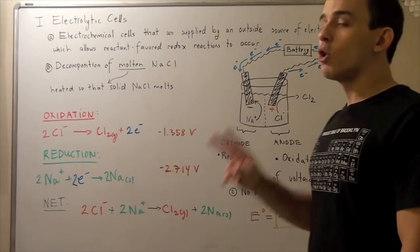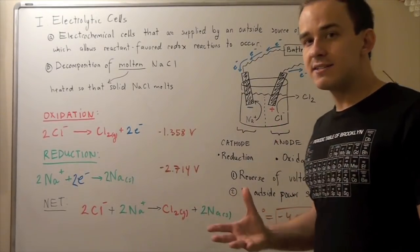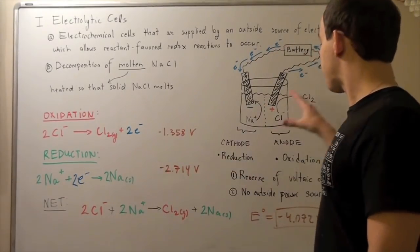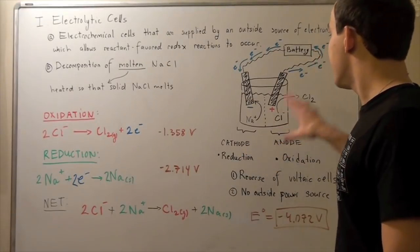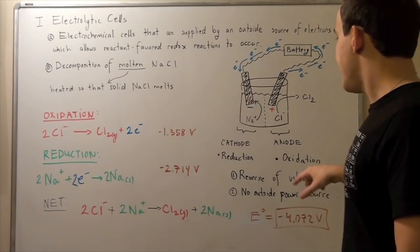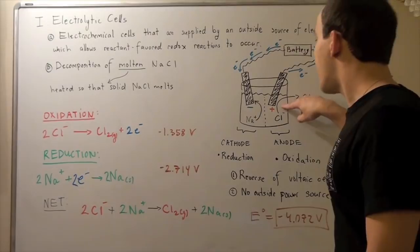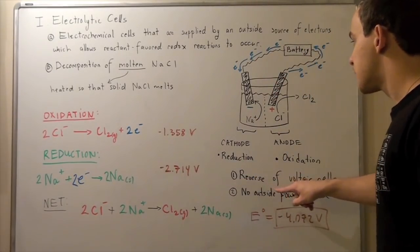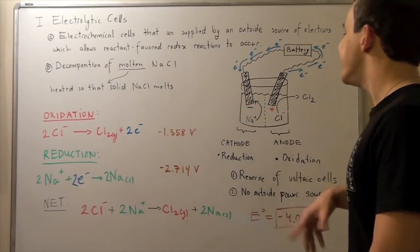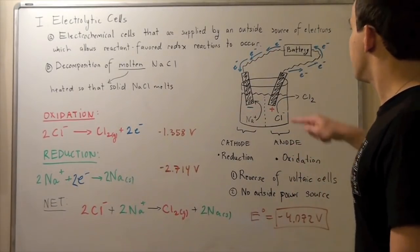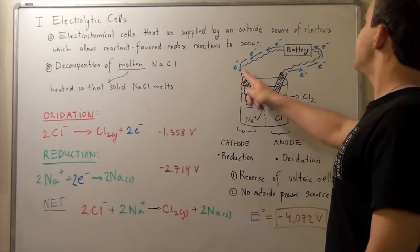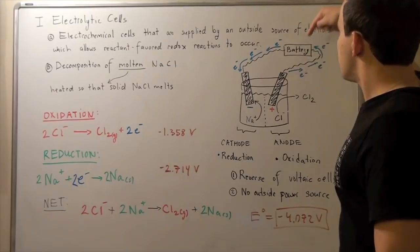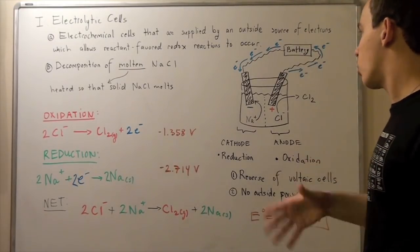So notice two important differences between voltaic cells and electrolytic cells. Our cathode in this situation is negative. And our anode is positive. But in voltaic cells, it's reverse. Our cathode is positive, and our anode is negative. And that's because this electron doesn't travel this way like it does in the voltaic cells, but it travels this way due to this outside battery source.